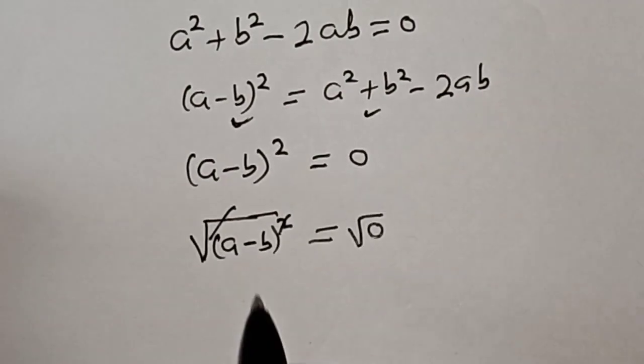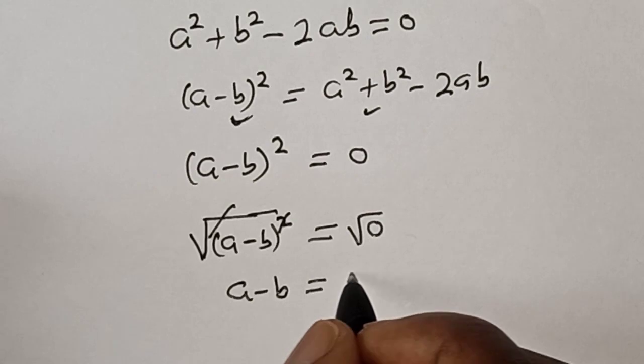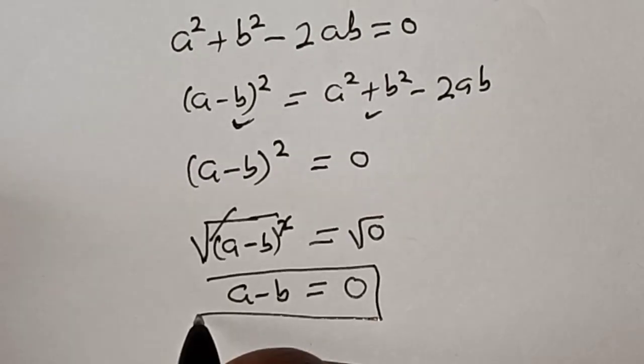This one will cancel this. Then a minus b is equal to square root of 0 is 0. And that is our final answer.